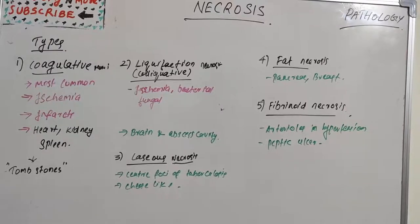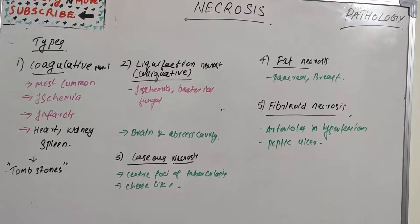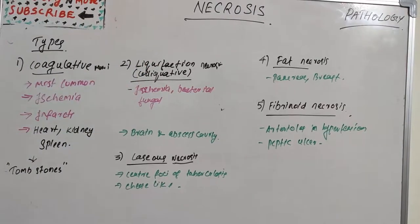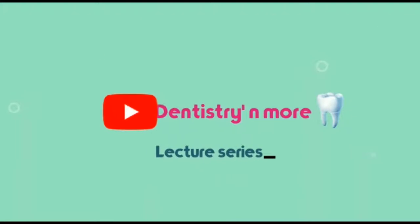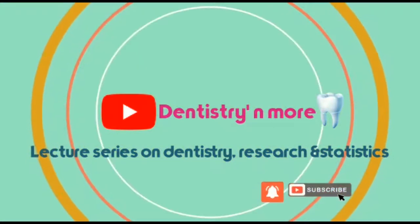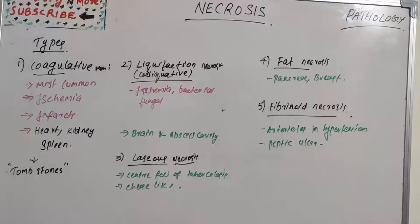Hello everyone, welcome back to another session in dentistry and more. Today we have necrosis in pathology. Necrosis, as we all know, is the death of cells in an organ or a tissue due to various reasons — it could be due to a disease, an injury, or failure of the blood supply, ultimately resulting in the death of cells. Let's learn the types of necrosis and its features.